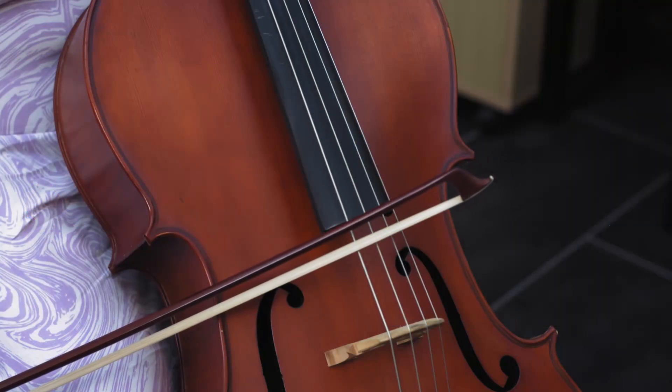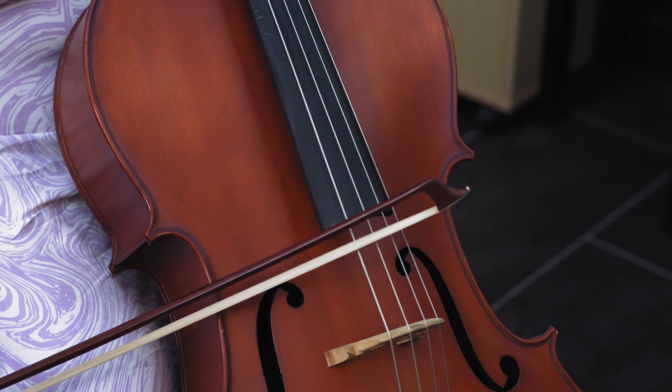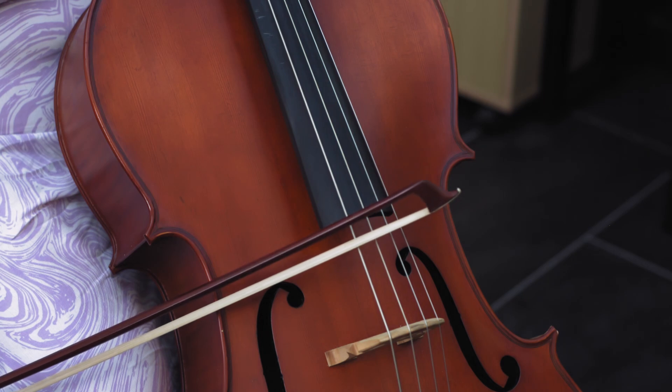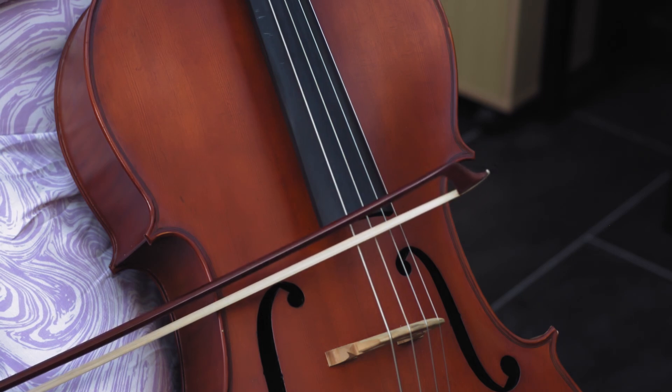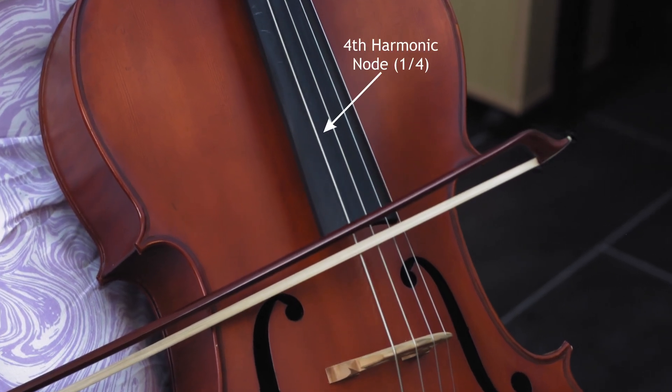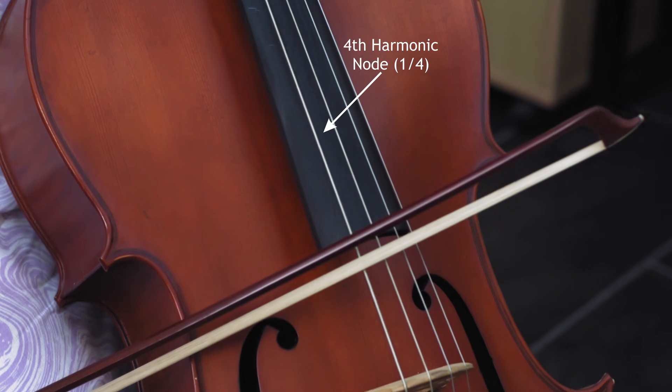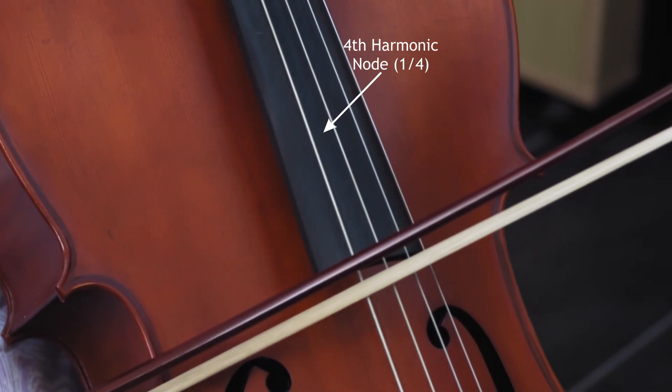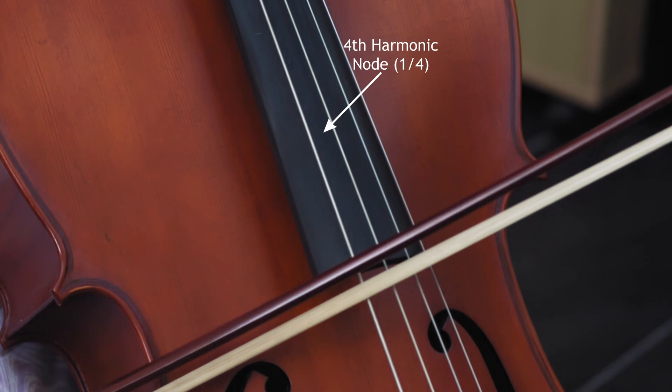On higher strings or on a violin or viola, a video will be coming soon to show these instruments, it can sound very pure and clear. Filming this in slow motion was particularly interesting as you can actually make out the node points in action. The arrow indicates one of the quarter or fourth harmonic node points. You can see how it remains quite still but vibrates on either side.